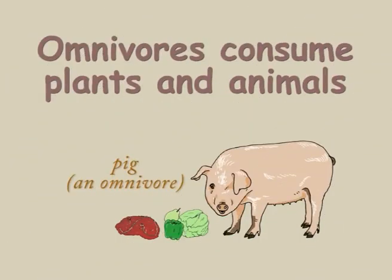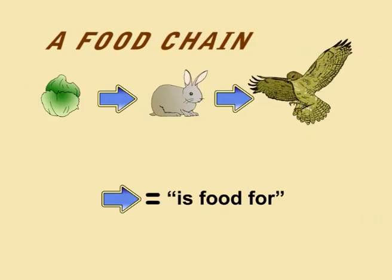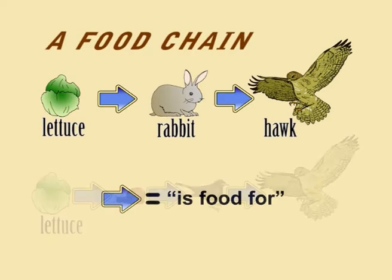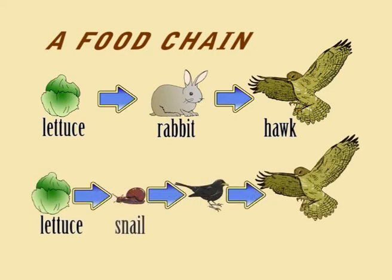Omnivores consume both plants and animals. A food chain shows what feeds on what. For example, lettuce is food for a rabbit, and a rabbit is food for a hawk. Lettuce is also food for a snail, a snail is food for a blackbird, and a blackbird is food for a hawk.